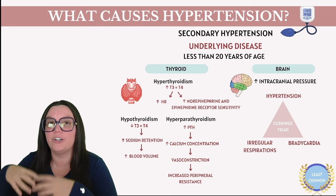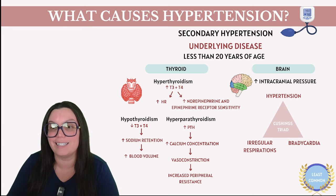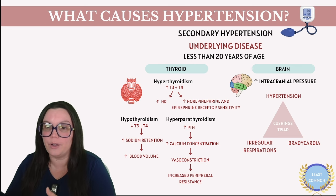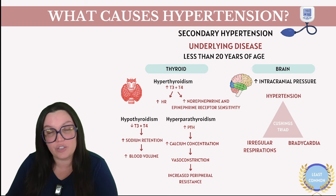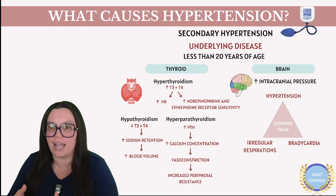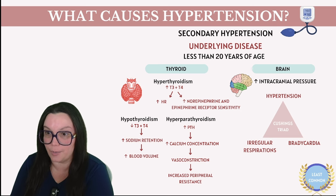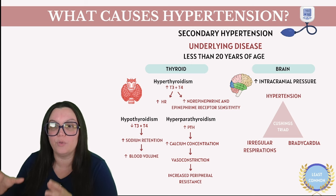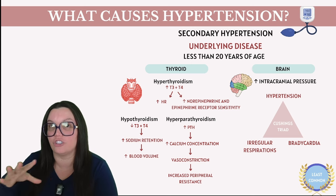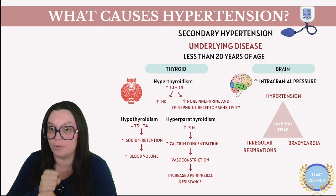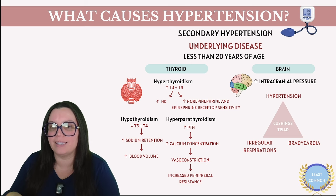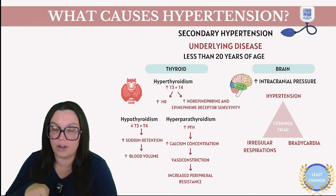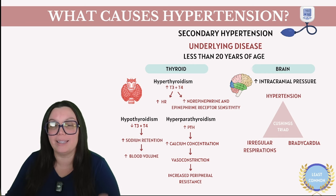Lastly, let's consider hyperparathyroidism — excessive parathyroid hormone, also known as PTH. With that excessive production, we see high levels of PTH in the bloodstream, which leads to an increase in calcium in our blood. This increase in calcium concentration affects smooth muscle cells, triggering vasoconstriction — that tightening of our blood vessels. This vasoconstriction increases total peripheral resistance, meaning blood can't flow freely through, ultimately leading to a rise in blood pressure.